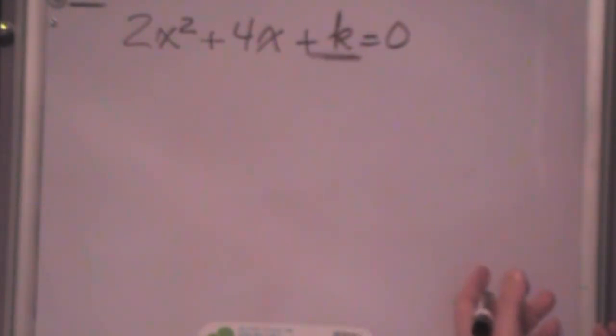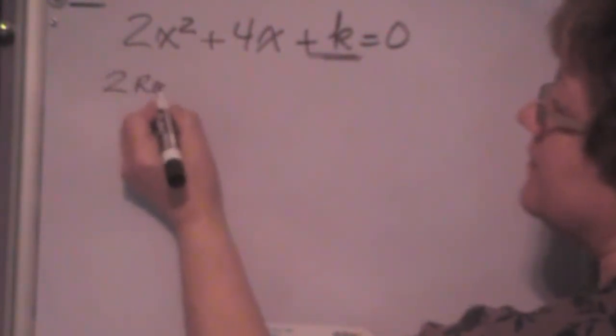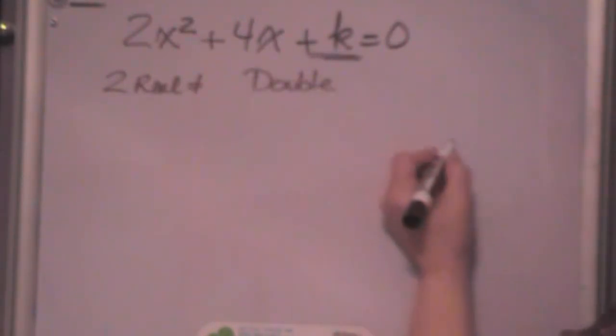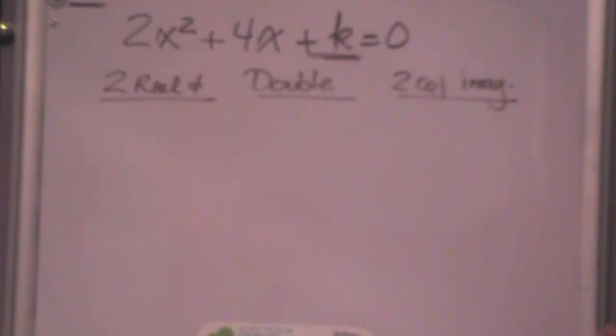To give us the different types of root. So we have two real unequal, and we have a double root, and we have two conjugate imaginary roots. Those are our three possibilities for roots. Now under each one of those categories we have to figure out how am I going to get two real unequal roots.